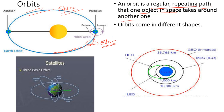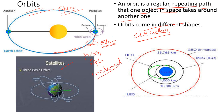Orbits come in different shapes — an orbit may be elliptical, it may be circular, and so on. For your basic understanding, orbits are classified into three major types: equatorial, polar, and inclined. As the name depicts, a polar orbit revolves around the earth from pole to pole; an equatorial orbit revolves around the earth above the equator; and an inclined orbit will be inclined from the equator — between the polar orbit and the equatorial orbit.